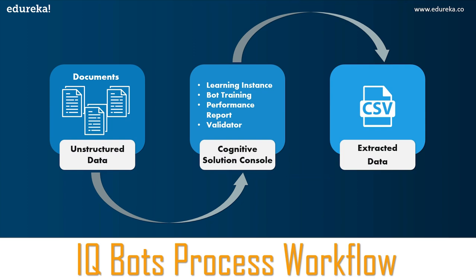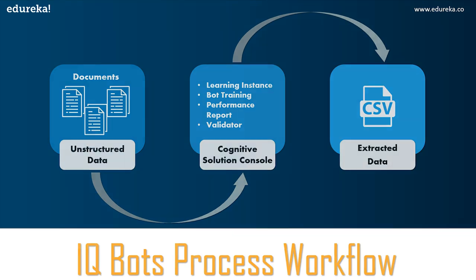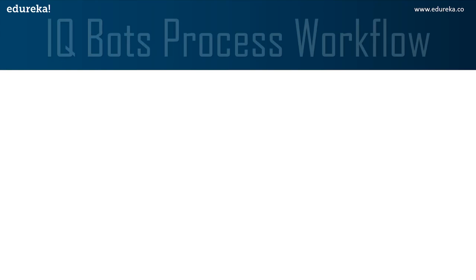When you validate results, you can see what data has been extracted and whether it is correct. If data is not extracted in the proper format, you can go back and train the data again. After everything is done on the IQ bot console, you can store the extracted data in CSV format as per your needs. The process workflow is simple: create a bot or learning instance, mention the details, then classify and train the data.